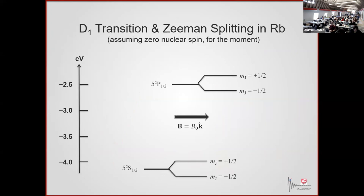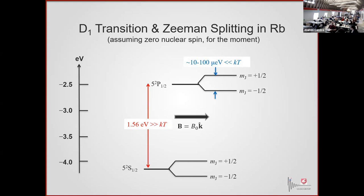This is a false picture, by the way. There is no alkaline metal that doesn't have nuclear spin, so this is a fake alkaline metal that for the moment doesn't have nuclear spin. I just want to remind you that the D1 transition is big — it's a volt and a half compared to kT — whereas even in a large laboratory magnetic field, the Zeeman splittings in these levels are small. So you expect the atoms to live in the ground state, which they do, even though I'm going to use the excited state to optically pump and polarize the ground state.